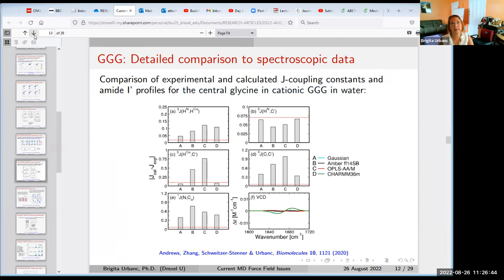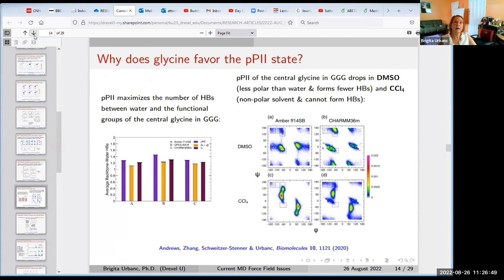This is a detailed comparison to spectroscopic data. I'm not going to go into details. But the interesting thing is, what is so special about PP2 that glycine favors? It turns out that PP2 is the state in which water can form the most hydrogen bonds with the backbone. That stabilizes the PP2 state. It's a property of the backbone of all amino acids. Of course, then the side chains will modulate the amount of PP2 because of their conformational preferences.